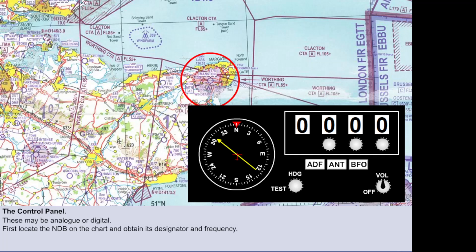Here, we see the NDB at Manston, with a designator MTN and a frequency of 347 kHz. There are several others on this extract. See if you can find them.